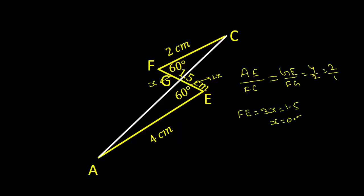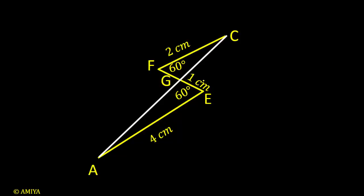So we can say x is 0.5. So this value should be 0.5, this value should be 1. So we identified the sides. We can say this one is 1 cm and this one is 60 degrees, this one is 4 cm.